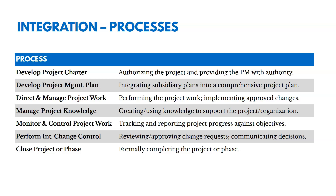You're going to direct and manage the project work — performing the project work documented in the plan — and implement approved changes. You're also going to manage project knowledge, creating and using knowledge to support the project and organization. As you execute on a project, lots of data gets generated, and you're figuring out which of that is useful for the current project and for future projects. Then you're going to monitor and control the project work — tracking and reporting on project progress against objectives. Performing integrated change control means reviewing and approving change requests and communicating those decisions. We can't just implement every change proposed by every stakeholder; we have to have a methodical way of reviewing and understanding the impact changes have across the project.